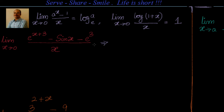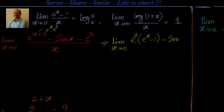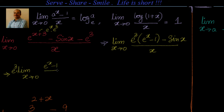This is equal to limit x tends to 0. Can I write e^(x+3) as e^x times e³? So that I can take e³ common. I can write it as e³ times (e^x minus 1) minus sin x, all divided by x. Now I can separate them. I can take e³ out: e³ times (e^x minus 1)/x minus limit x tends to 0 of sin x divided by x.